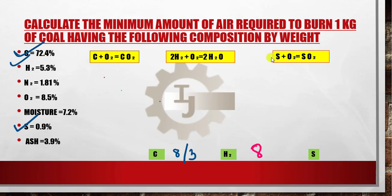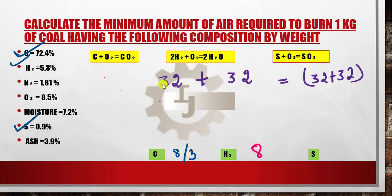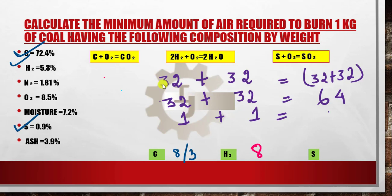For the sulfur reaction: S + O₂ → SO₂. The molecular weight of sulfur is 32 and oxygen is 32, so 32 + 32 = 64. Dividing both sides by 32 gives 1 + 1 = 2. So for 1 kg of sulfur we need 1 kg of oxygen, and it produces 2 kg of sulfur dioxide. The amount of oxygen required for sulfur is 1.